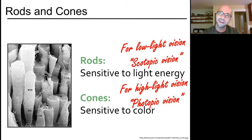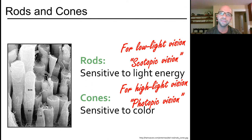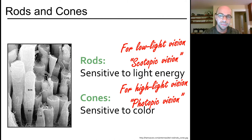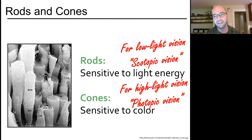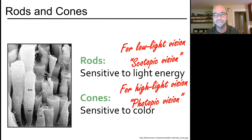What we really need to understand is the interface at the retina — how the signal is being converted — because that tells us how to produce effective displays. The retina is composed of two different anatomical features: rods and cones. Rods are largely sensitive to light energy — just is light bright or not — and are often used for low light or scotopic vision, where color isn't the important signal. Cones are sensitive to color and are used in high light or photopic vision.